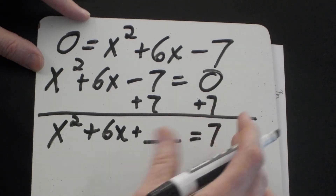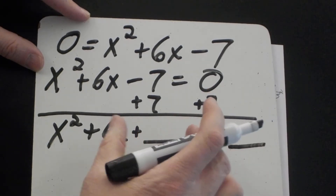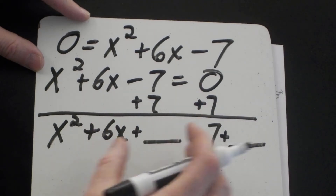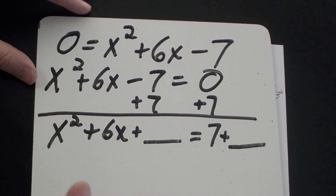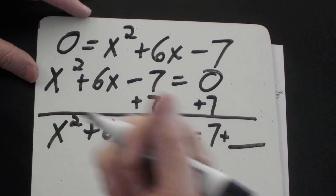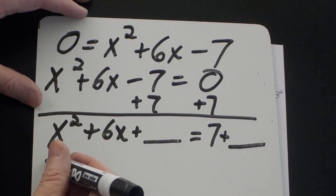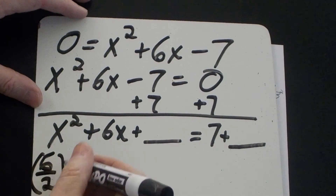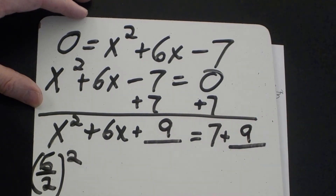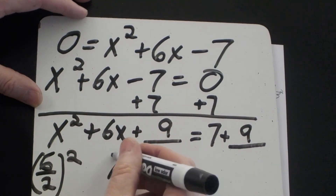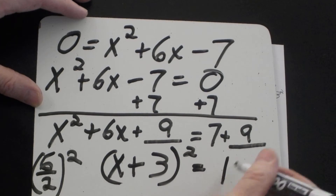What's different here: I'm completing the square, but since I'm adding to one side, I add the same amount to the other side to keep it balanced. I take 6 over 2 and square that — that's 3 squared — so I add 9 to both sides. That gives me (x + 3) squared equals 16.